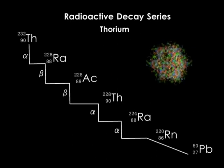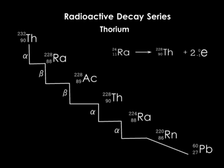From this series, you notice that two similar particles can be released in succession to form a new nuclide. For instance, radium-228 undergoes two successive beta decays to form thorium-228. This equation can be summarized as shown on your screen. Thorium-228 undergoes two successive alpha decays to form radon-220, and these can be written as shown on your screen.